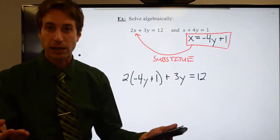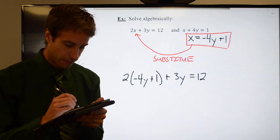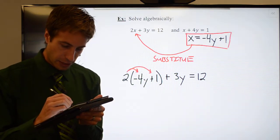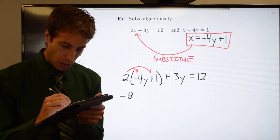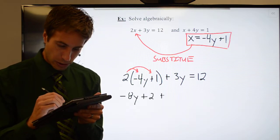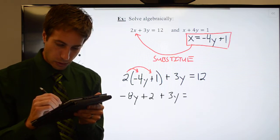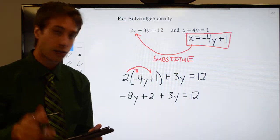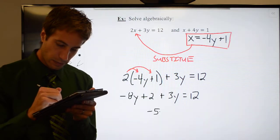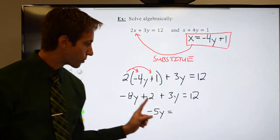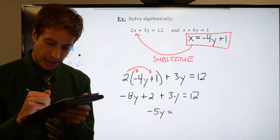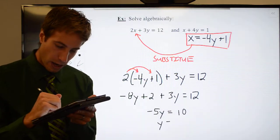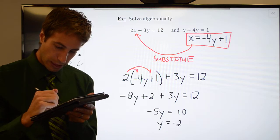Well, simplify. Combine like terms. Solve for y. Let's distribute this through the parentheses. That'd be the first thing I do. It's going to give me negative 8y plus 2 plus 3y is equal to 12. Go ahead and combine like terms. Negative 8y plus 3y should be minus 5y. I will subtract the 2 to the other side. That gives me 10. Divide both sides by negative 5, and I get y is equal to minus 2.